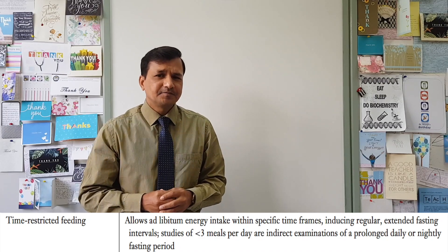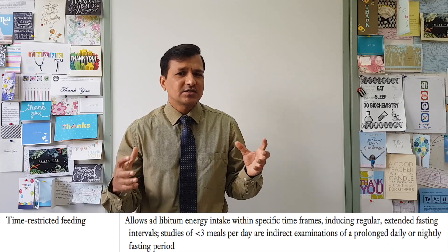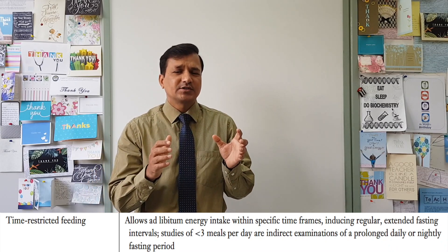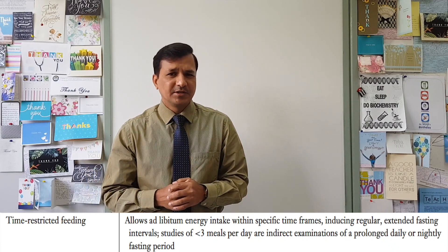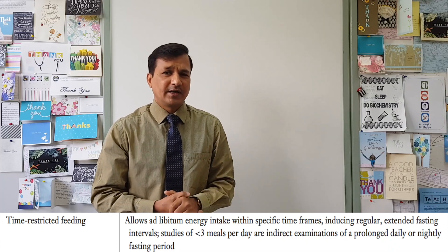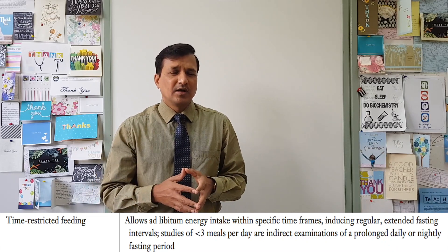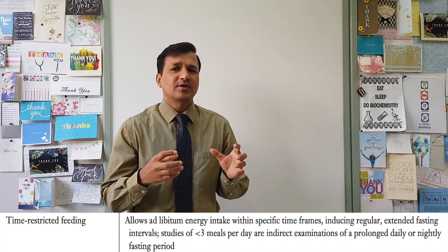Another type of intermittent fasting is called time restricted feeding. In time restricted feeding, a person is not fasting the entire day — they do eat — but food intake is restricted to a certain time frame. The majority of the time, fewer than three meals are taken per day, usually one or two meals. The idea is to extend the fasting period on a regular basis.